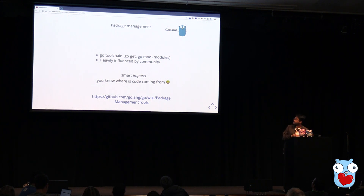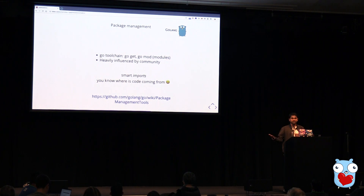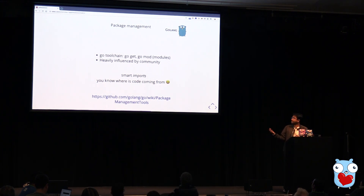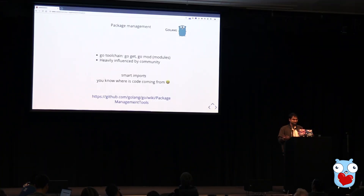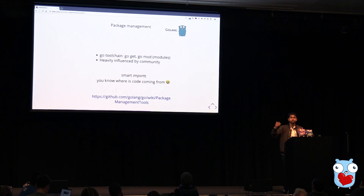In Go package management, the project I worked on was two years old and was using Glide. When I ran through the Glide documentation, it was saying to start using Go modules. Go itself has lots of tools built in — you don't need an external dependency manager like NPM. Everything is inside there, and now we have Go modules. What I found is that it was heavily influenced by the community: Go modules came about a year back and took the good parts from all the existing tools. I also really like Go's smart imports — in Node.js you just import a package name and don't know where it's coming from, but in Go you specify the source URL, so you know exactly where the code comes from and can verify it.